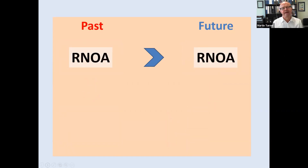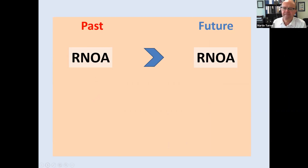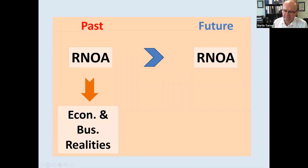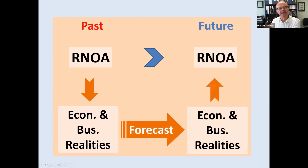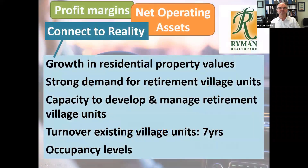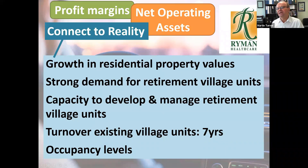We might have the return on net operating assets from the past — Ryman Healthcare's return on net operating assets used to be huge years ago and has been gradually coming down. But what is it going to be in the future? We go: what has been causing the return on net operating assets in the past? What has been driving that for Ryman Healthcare? We're going to forecast that, and then we'll get to our forecast of return on net operating assets. So what's been driving the profit margins and the net operating assets of Ryman Healthcare in the past? We all have to connect to reality.